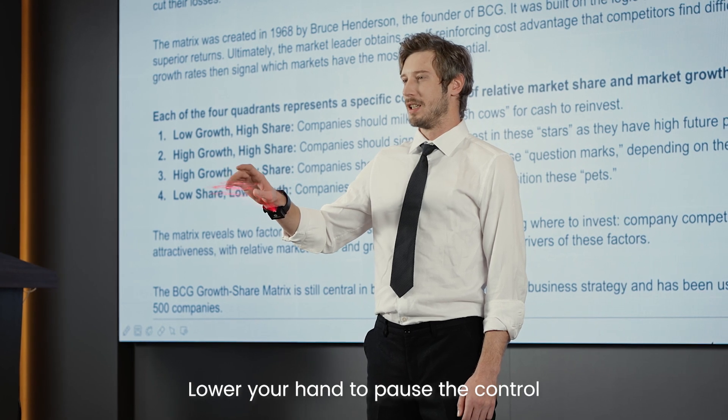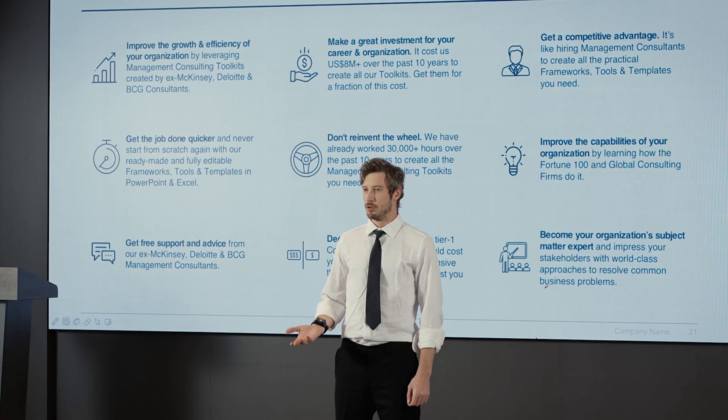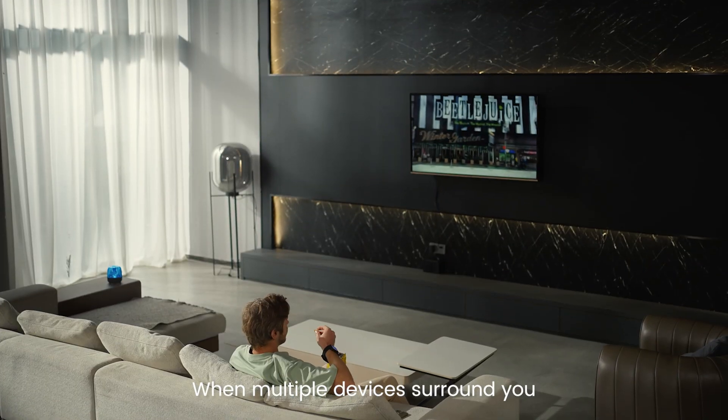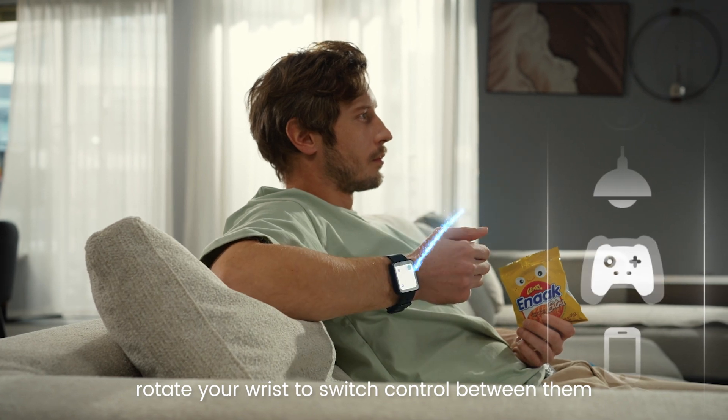Lower your hand to pause the control. Raise it or tap to activate. When multiple devices surround you, rotate your wrist to switch control between them.